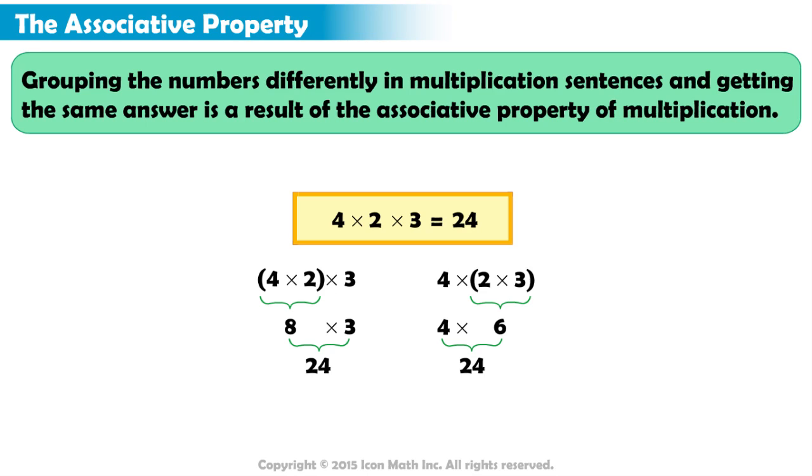By this property, if we know that four times two times three equals twenty-four, then we also know that two times three times four equals twenty-four.